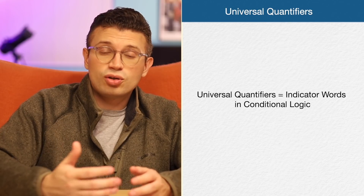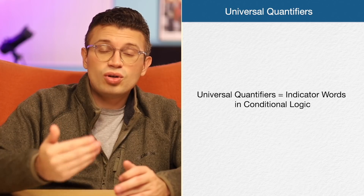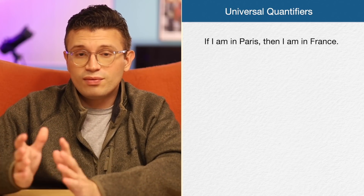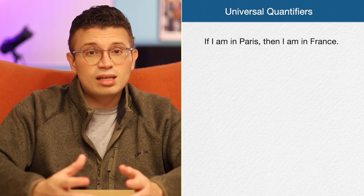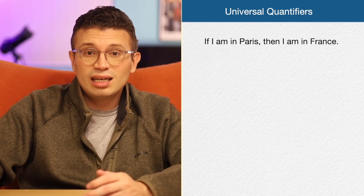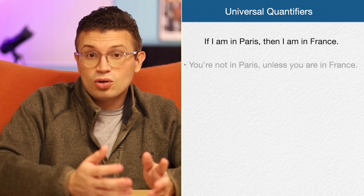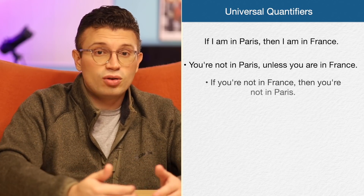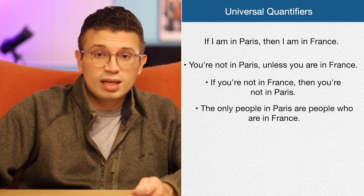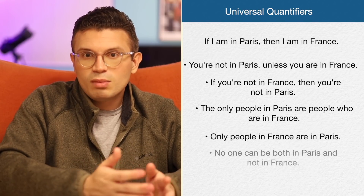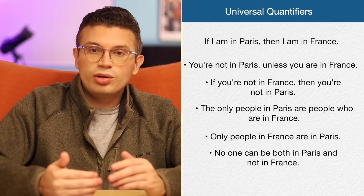So how are universal quantifiers going to help me? They're the indicator words that let you know you have conditional logic. In my example, we have 'if' and 'then.' But look at all the different ways I can express the same exact idea of 'if I am in Paris, then I am in France.' I can say: you're not in Paris unless you're in France; if you're not in France, then you're not in Paris; the only people in Paris are people who are in France; no one can be both in Paris and not in France. Those are all saying the same exact thing and are all diagrammed the same way. English by itself is not so great a tool for representing these abstract and complicated logical relationships. So what we need to do is install a plug-in to the English language — and that's what these universal quantifiers are for.